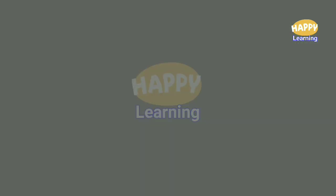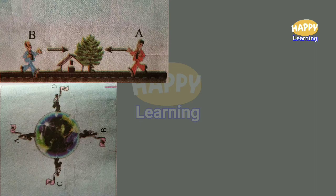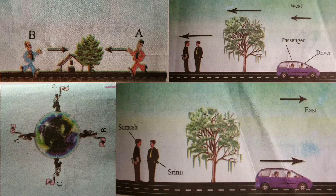So, with these examples, we understand that whether bodies are at rest or moving, rest and motion are relative terms — just like left, right, top, and bottom are relative terms. The same object may be at rest for one person and in motion for another. For the person standing on the footpath, the tree is at rest; but for the person sitting in the moving car, the tree appears to be moving in the reverse direction. Like that, motion is relative.